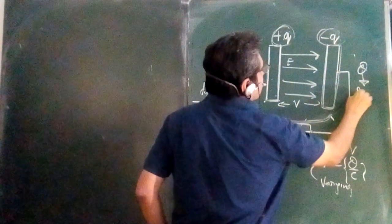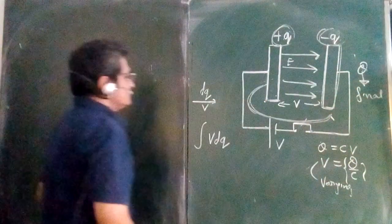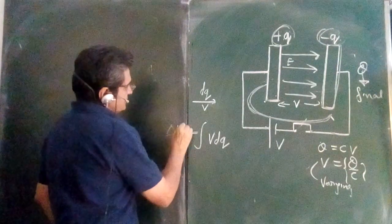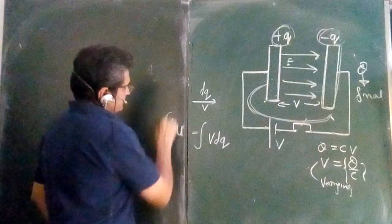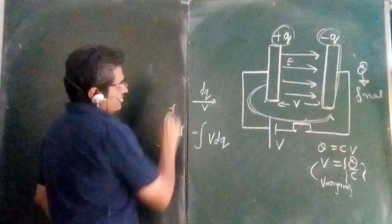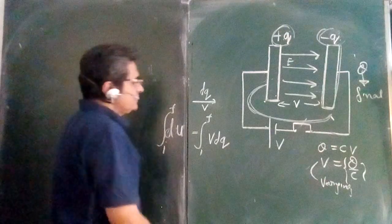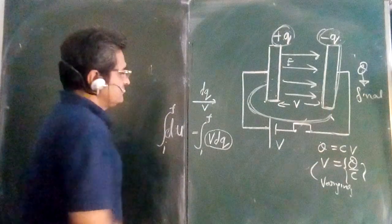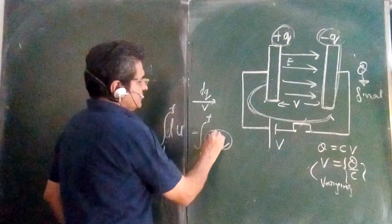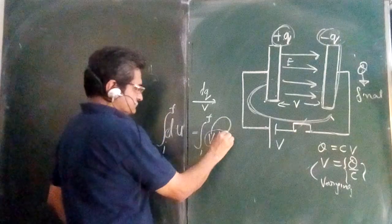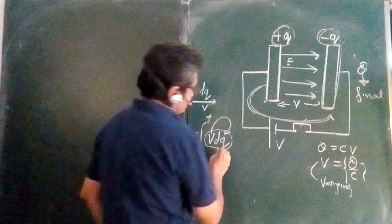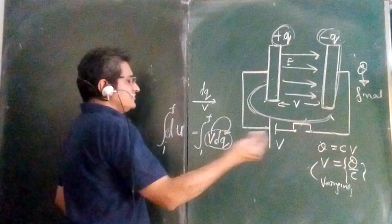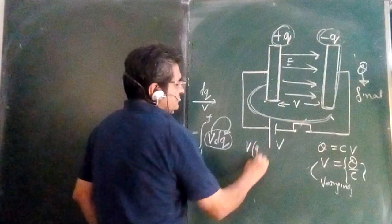Let the final charges be plus Q and minus Q. We have to look at the intermediate stage also, so we write the integral from initial to final. Since V is a variable here, we convert V in terms of Q, because it is differentiated with respect to dq. Had V been constant, it would simply be V times (Q2 minus Q1), but that is not the case.